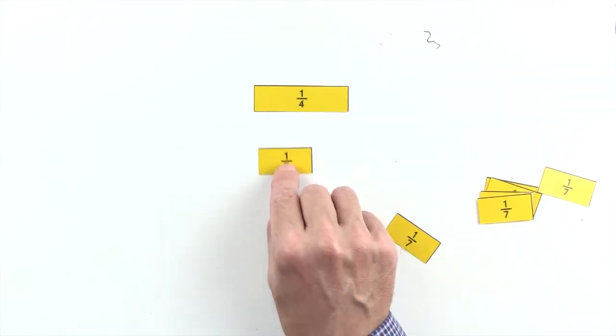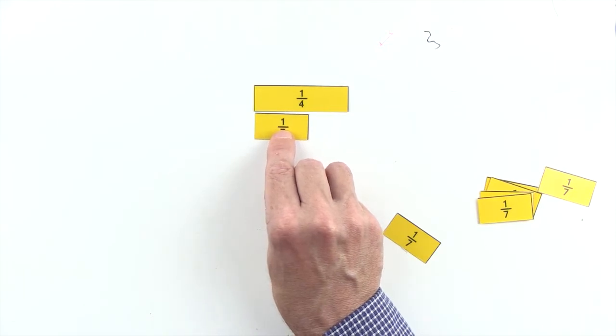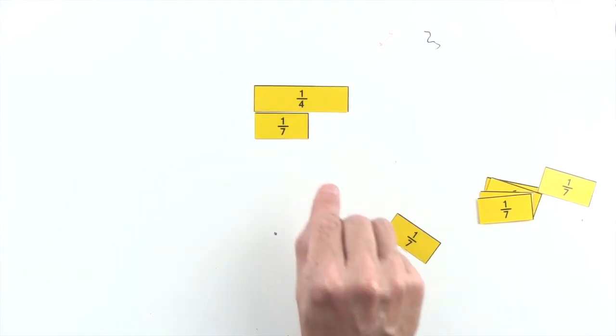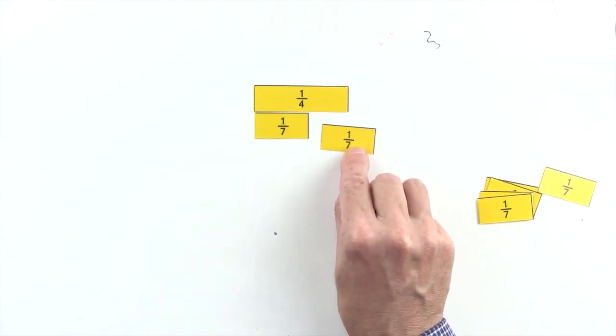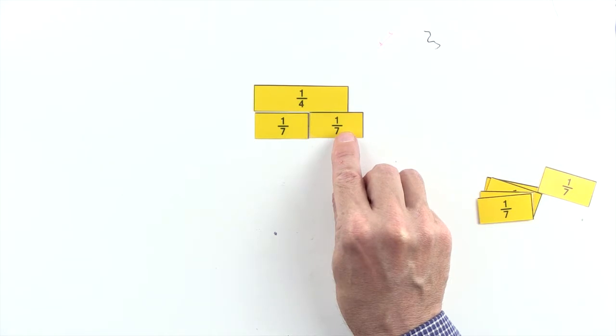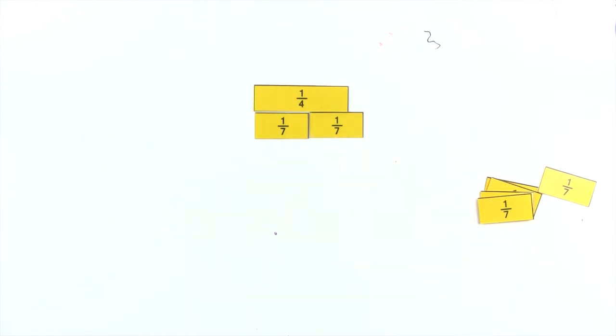One seventh is less than one quarter, and two sevenths are greater than one quarter, so we can't use sevenths to make an equivalent fraction to one quarter.